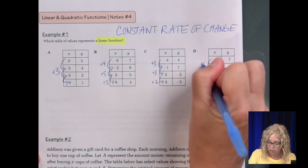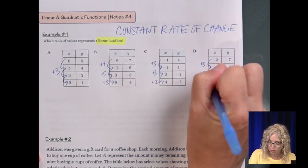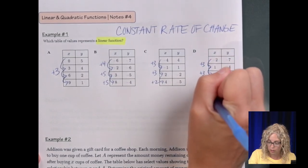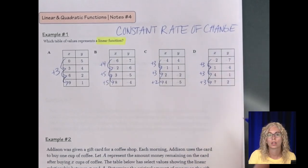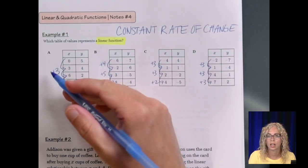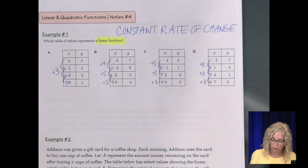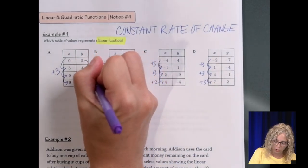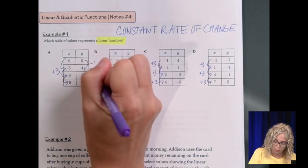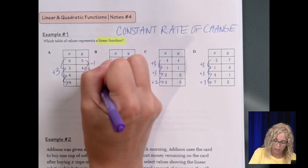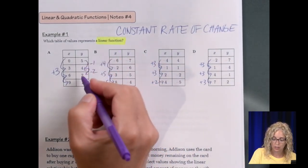From negative 2 to 1, increase of 3. 1 to 4, increase of 3. 4 to 7, increase of 3. So the whole thing is an increase of 3. So let's look at a and d. Now for the y's, from 5 to 4, it's minus 1. From 4 to 2, it's minus 2. It's not the same.